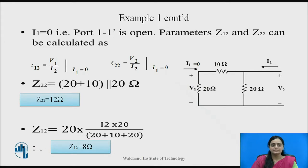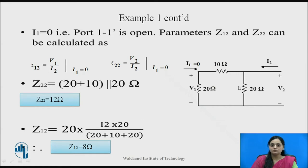Now let us calculate Z12 and Z22. Z22 is the driving point impedance of port 2, calculated as the ratio of V2 to I2 — the total resistance of the network, which is 20 plus 10 in series, giving 30 ohms in parallel with 20 ohms. Z22 comes out to be 12 ohms. Using the current division rule again, Z12 is the ratio of V1 to I2. The current through the 20 ohm resistor is I2 multiplied by 20 divided by the total resistance of 20 plus 10 plus 20. Hence, Z12 comes out to be 8 ohms.